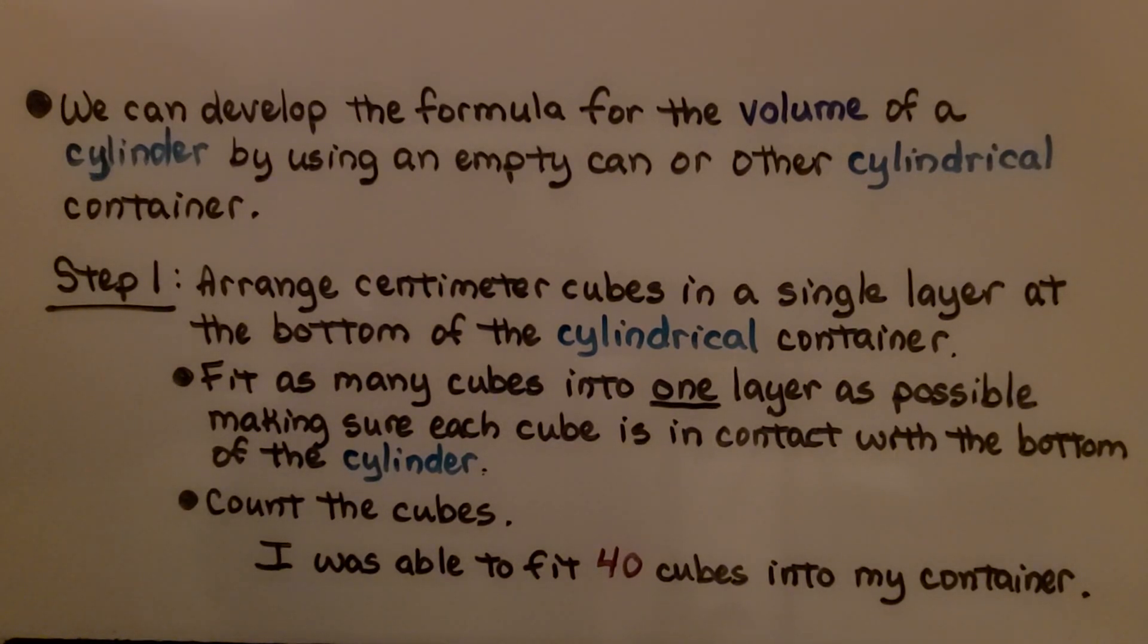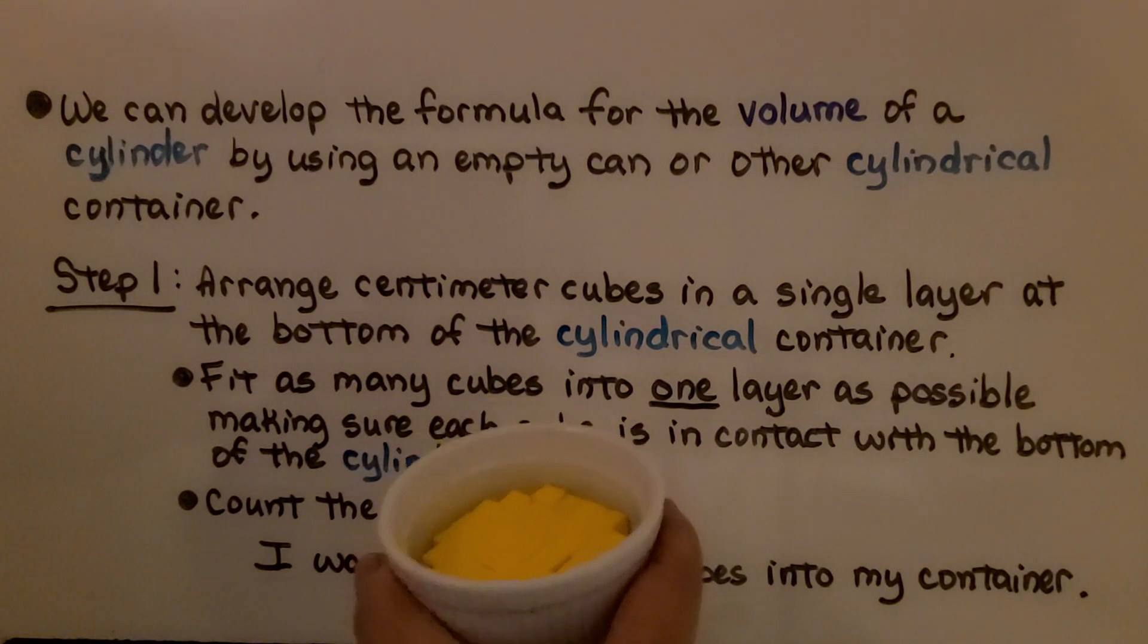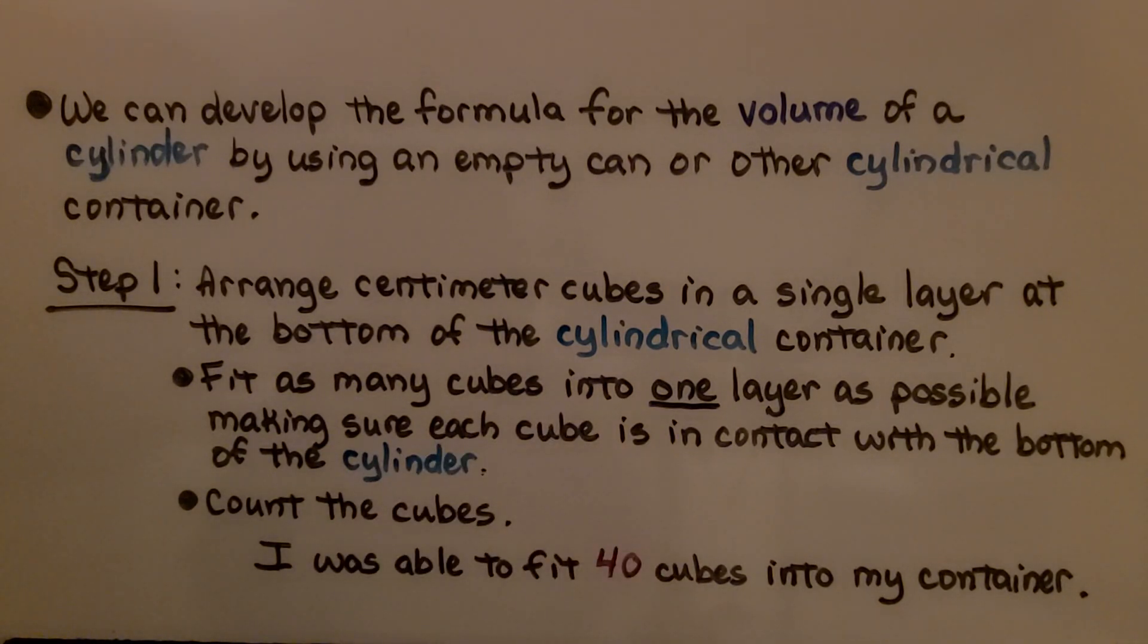We can develop the formula for the volume of a cylinder by using an empty can or other cylindrical container. Step one: we arrange centimeter cubes in a single layer at the bottom of the cylindrical container, just like I did with this cylinder dish and my cubes. We fit as many cubes into one layer as possible, making sure each cube is in contact with the bottom of the cylinder.